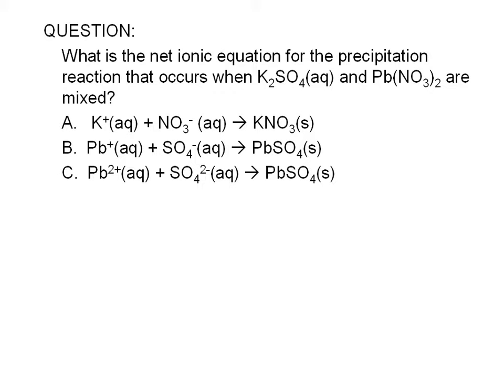Potassium sulfate gives us potassium and sulfate ions. Lead 2 nitrate gives us lead 2 and nitrate ions. According to our solubility rules, any compound containing potassium or nitrate ions are soluble in water.